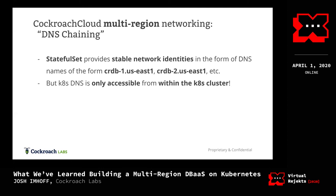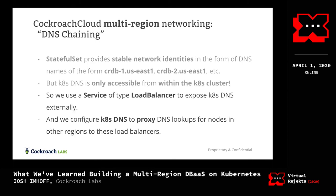Our approach we call DNS chaining. The StatefulSet provides a stable network identity in the form of DNS names — when I say stable I mean that something like `crdb-1.us-east-1` is linked to a specific persistent disk and will remain linked across restarts. But the Kubernetes DNS service is only accessible from within that Kubernetes cluster. So the question is how can we expose it more broadly. What we do is use a Service of type LoadBalancer to expose the Kubernetes DNS service externally, and then we configure Kubernetes DNS to proxy DNS lookups for nodes in other regions to those load balancers.